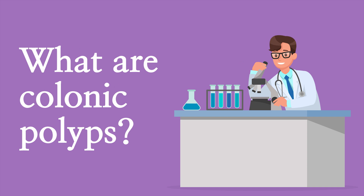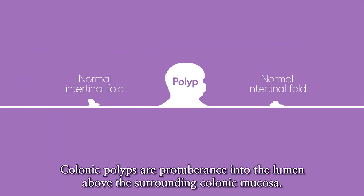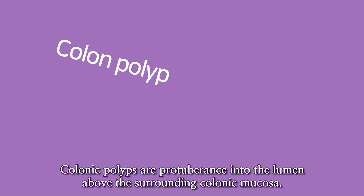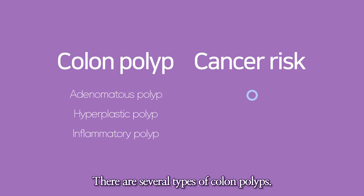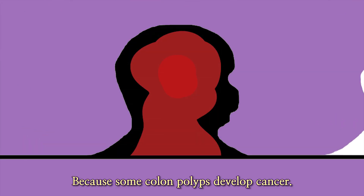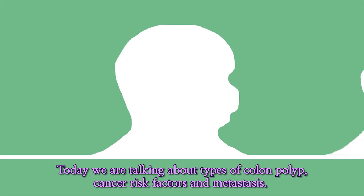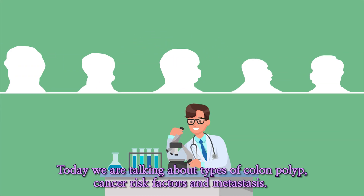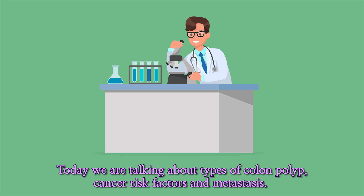What are colonic polyps? Colonic polyps are a protuberance into the lumen above the surrounding colonic mucosa. There are several types of colon polyps. You need to know what type of polyp you have, because some colon polyps develop cancer. Today we are talking about types of colon polyp, cancer risk factors, and metastasis.